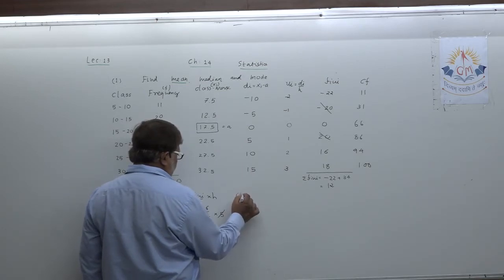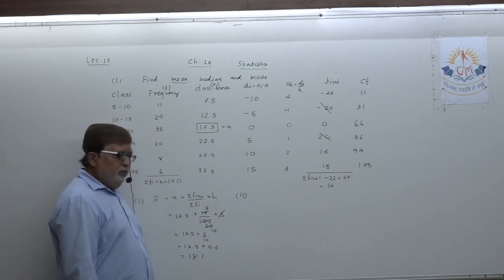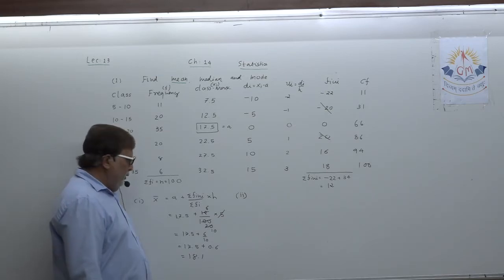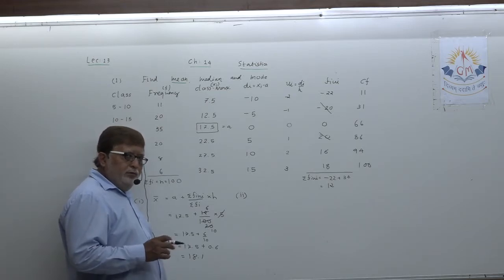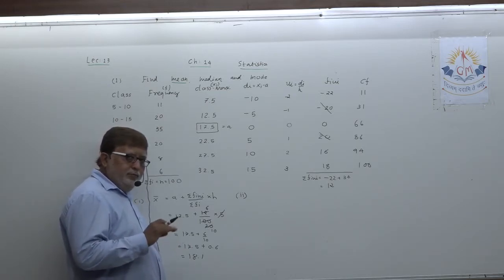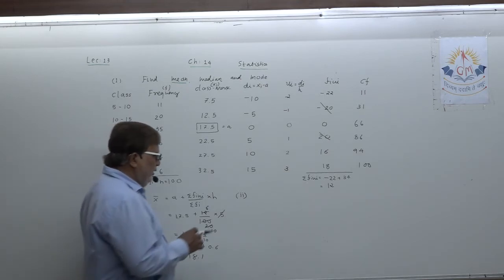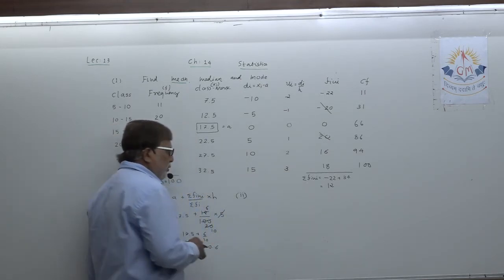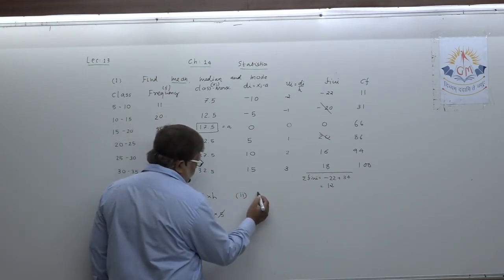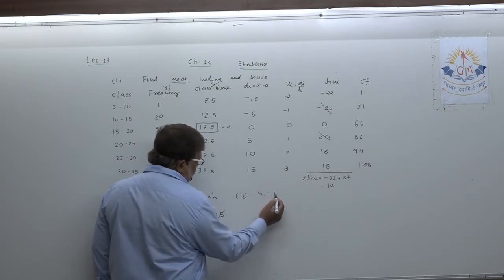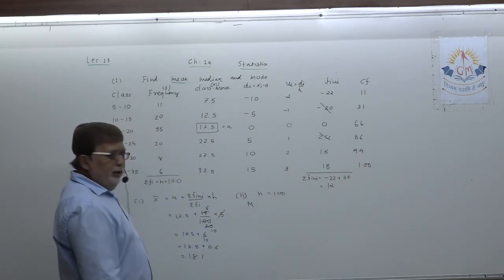Now let us go for finding median of the data. The procedure for finding median: N equals 100. That means you know the formula. N equals 100, so you are looking for the 50th observation. Be very conscious: the 50th observation — where you find it in the CF column, that will be your CF (preceding cumulative frequency), F will be the frequency of that class, and L will be the lower boundary.